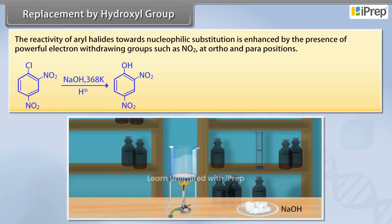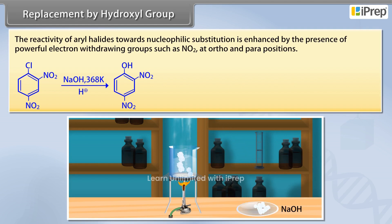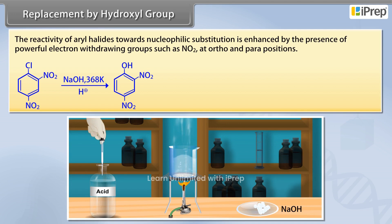The reactivity of aryl halides towards nucleophilic substitution is enhanced by the presence of powerful electron-withdrawing groups such as NO2 at ortho- and para-positions.